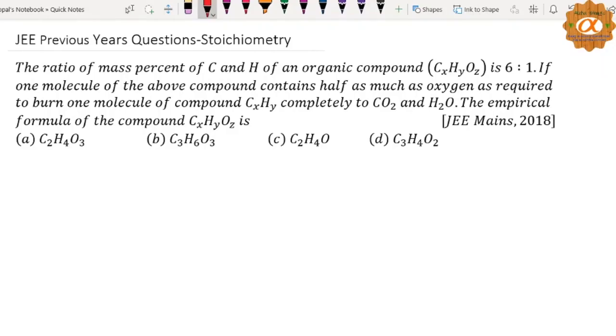Okay, JEE Mains 2018 question: The ratio of mass percent of carbon and hydrogen in an organic compound CxHyOz is 6 is to 1. If one molecule of the above compound contains half as much oxygen as required to burn one molecule of CxHy completely to CO2 and H2O, the empirical formula of the compound is...